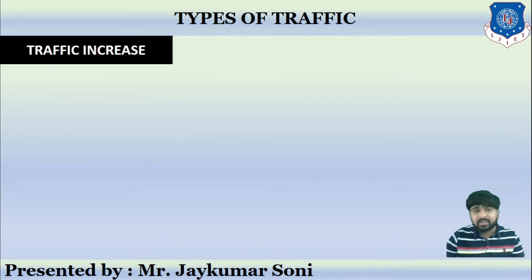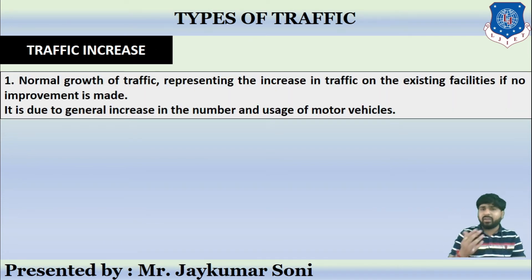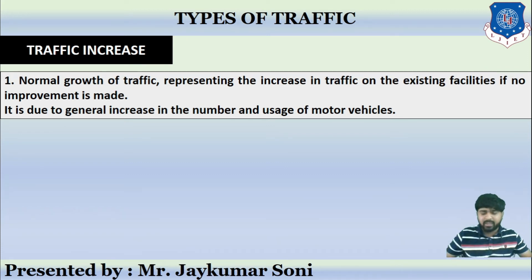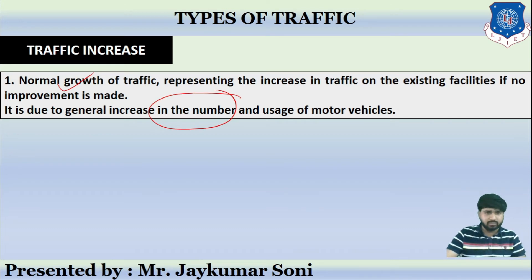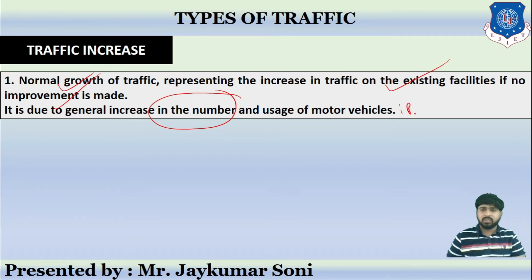The second type is traffic increase. There are various kinds of growth, such as normal growth of traffic. Normal growth represents the increase in traffic on an existing facility if no improvement is made. If a road was built years ago with no improvement but currently accumulates existing traffic, that is normal growth. It is due to a general increase in the number and usage of motor vehicles.